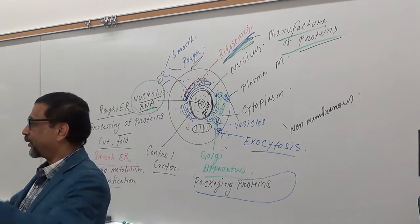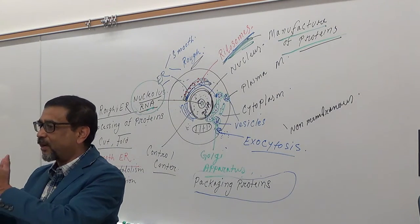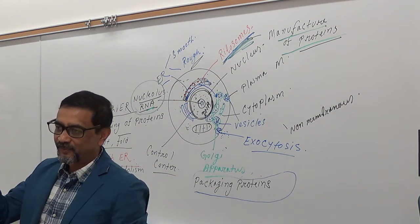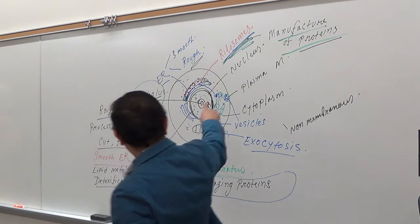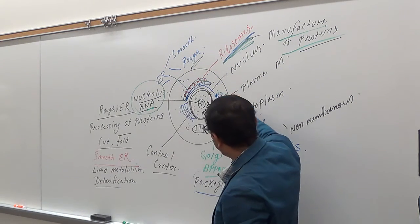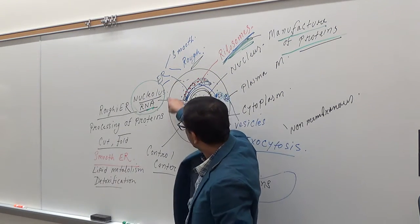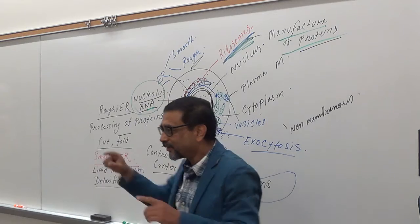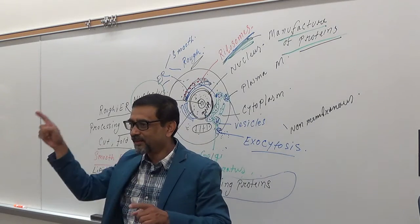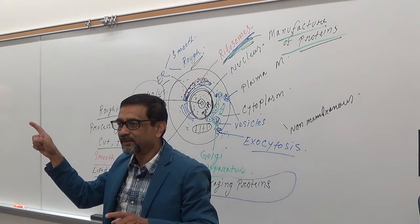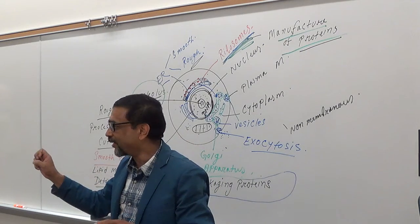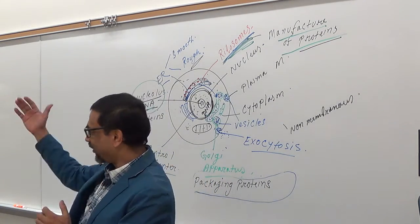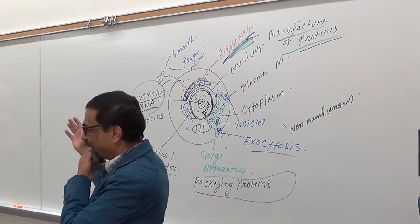To review: a typical cell has three basic parts. The plasma membrane gives the shape and boundary of the cell and separates inside from outside.